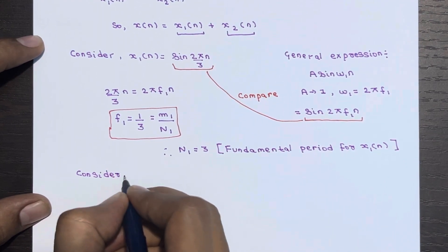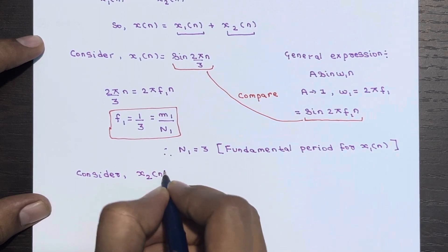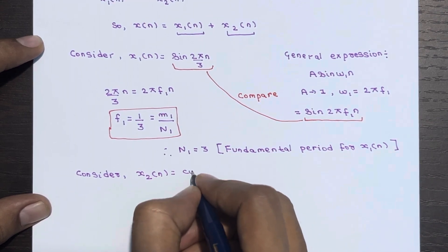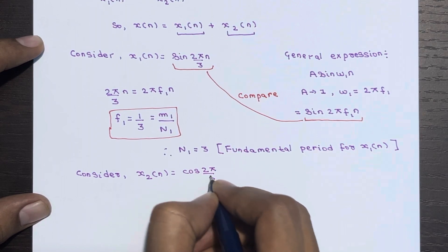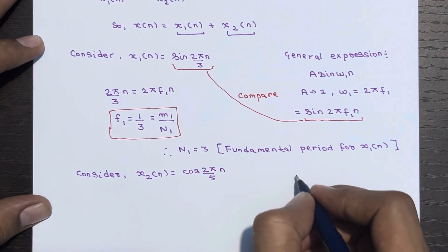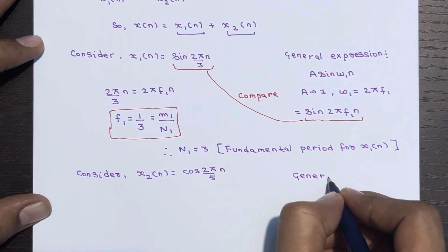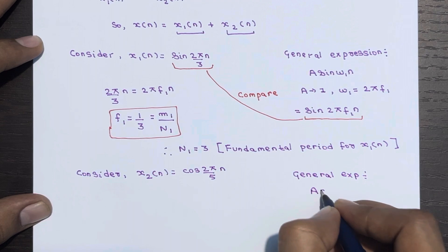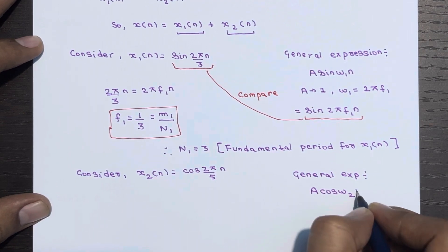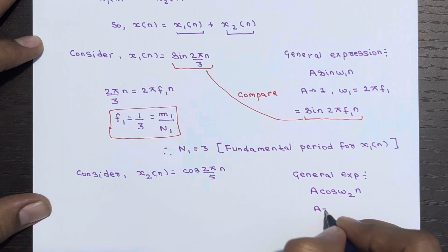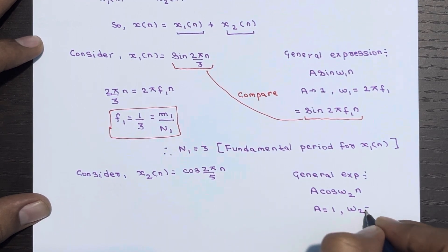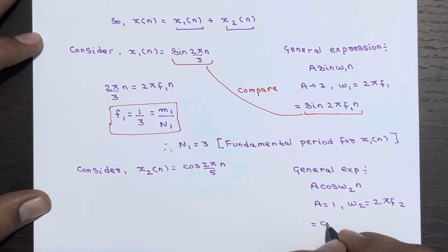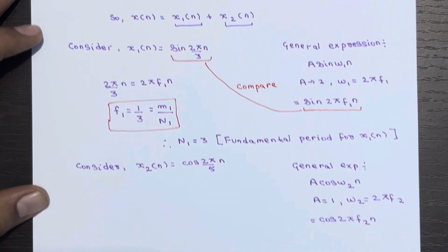Now let's move to x2(n). Consider x2(n) = cos(2π/5 · n). The general expression for a cosine signal is a·cos(ω₂·n), and since ω₂ = 2π·f2, it becomes cos(2π·f2·n). We compare this expression with x2(n).